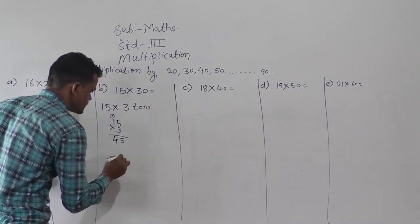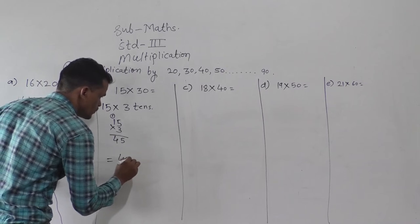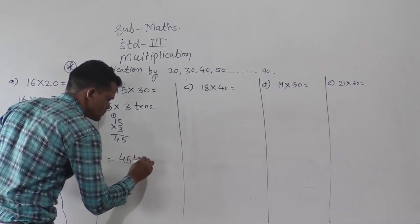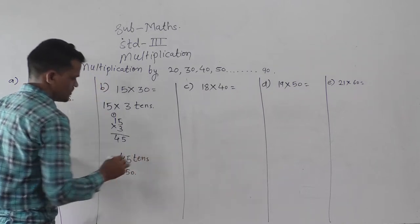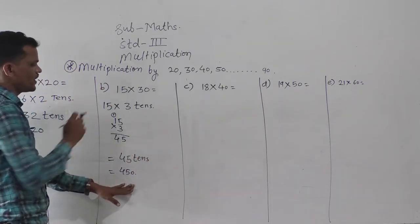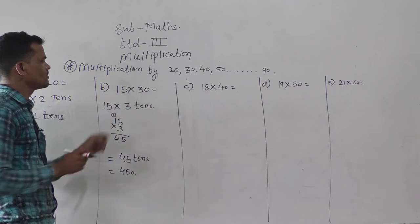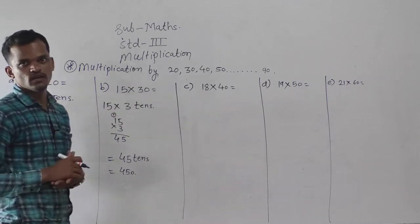So here we will get answer 45 tens. So 45 tens means 450. So 450 is the answer of 15 into 30.